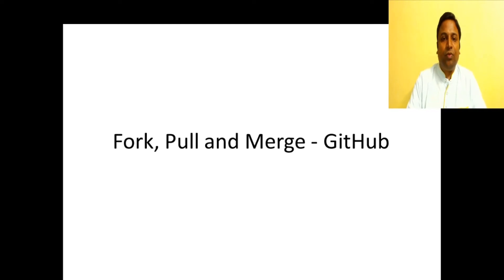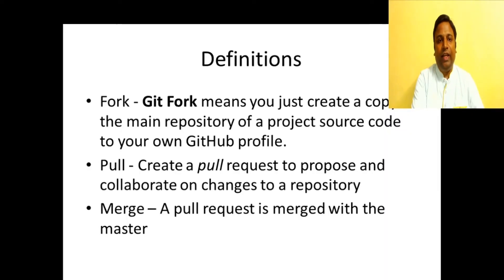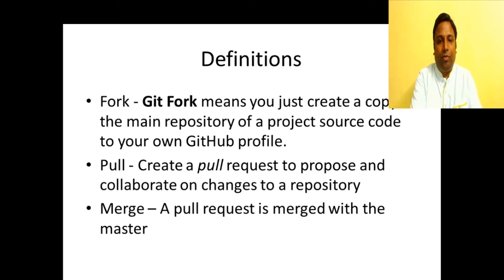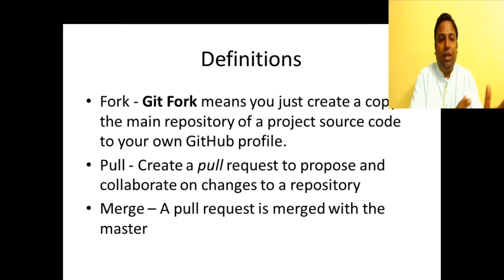Let's start with some definitions. A fork is nothing but creating a copy of the main repository in your GitHub profile. A pull request is used for proposing code changes to the main repository — you're proposing to push those code changes to the main repository. Merge is nothing but merging all the proposed code changes with the main repository.